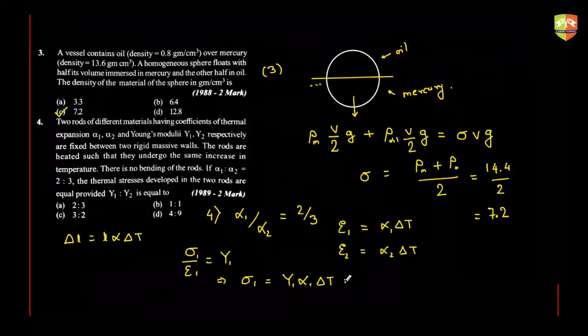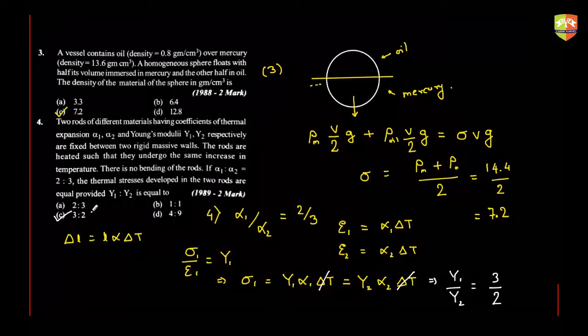Then stress by strain, sigma 1 by epsilon 1 is given as Y1 alpha 1. So basically sigma 1 is Y1 into epsilon 1, which is Y1 alpha 1 delta T. This should be equal to Y2 alpha 2 delta T, right, because thermal stresses are equal. Now alpha 1 alpha 2 is 2 by 3. So if I remove delta T, from here I will get Y1 by Y2 will be equal to alpha 2 by alpha 1, which is 3 by 2. So option C is correct over here.